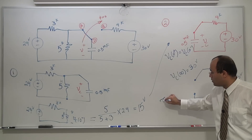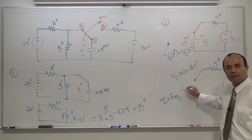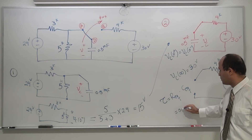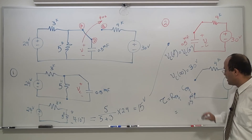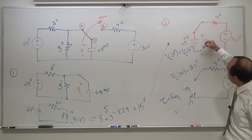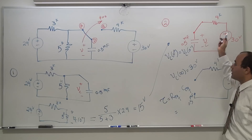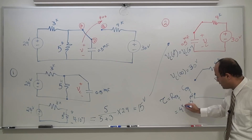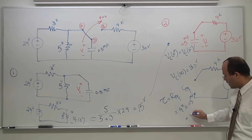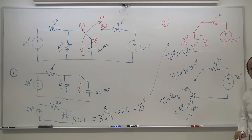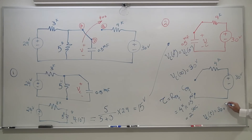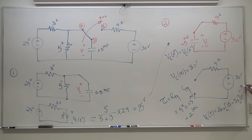To find tau: stand across the capacitor in topology 2, shut down the 30 V source (becomes short). Looking at the design, you only see 4 kΩ. So R_eq = 4 kΩ. C = 0.5 mF. Tau = R_eq × C = 4,000 × 0.0005 = 2 seconds. The kilo and milli cancel. V_C(t) = V_C(∞) + [V_C(0+) − V_C(∞)]·e^(−t/τ) = 30 + (15 − 30)·e^(−t/2).